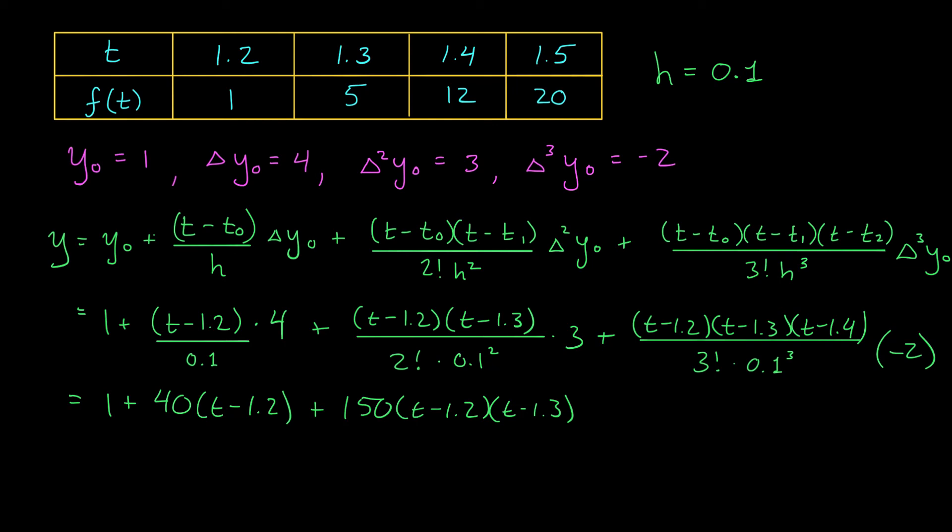So the 6 and the 2 are going to simplify to 1/3. And I'm left with minus 1000 over 3, t minus 1.2, t minus 1.3, t minus 1.4.